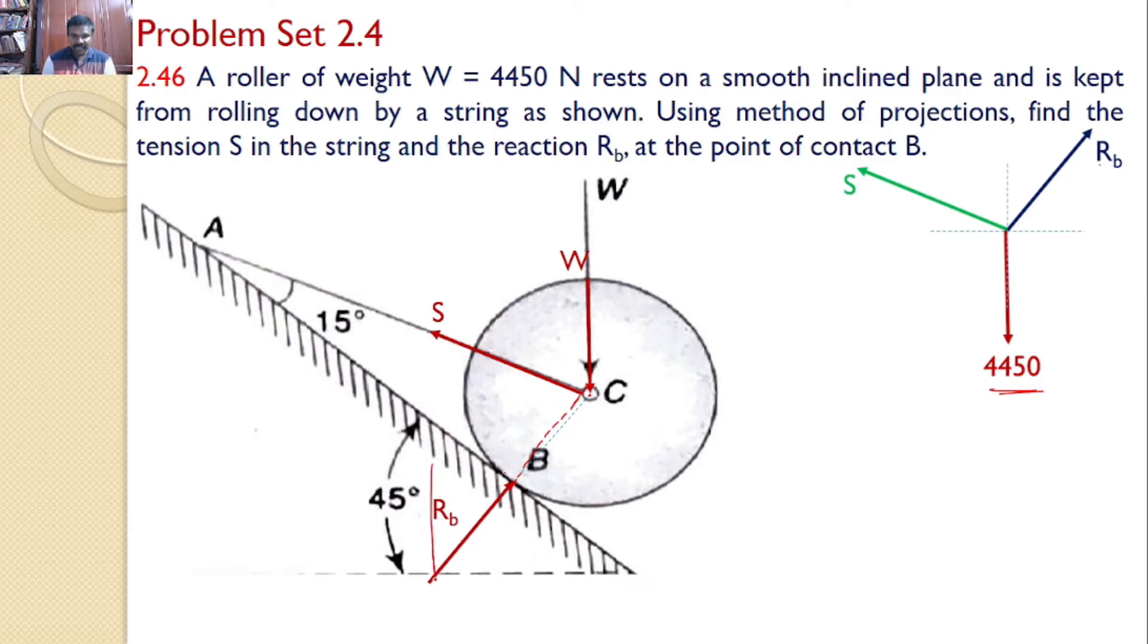Hence this Rb makes an angle 45 with the vertical. If it is 45 with the vertical it is also equal to 45 with the horizontal. Hence I can say Rb makes an angle 45 with the horizontal.